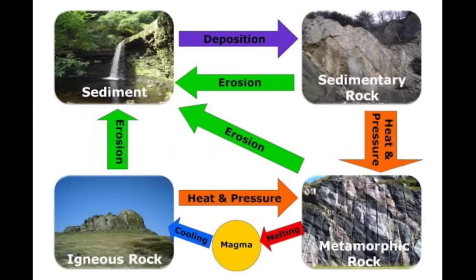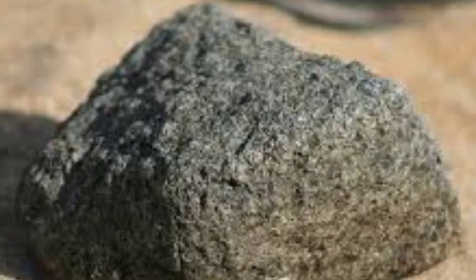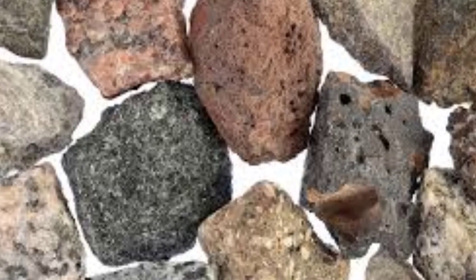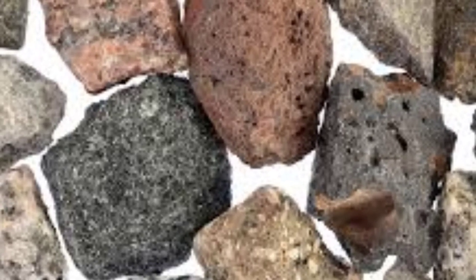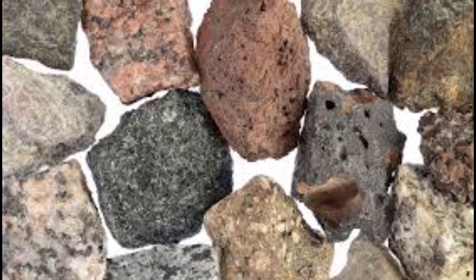Dolerite is a medium grain equivalent of gabbro. The crystals are slightly smaller than gabbro, indicating that the magma cooled more quickly. It usually occurs in small intrusions called dikes or sills, which are sheet-like and cut through the surrounding rocks.